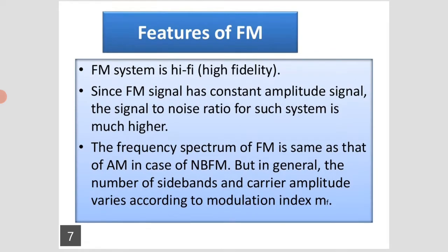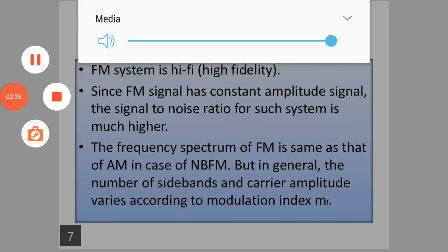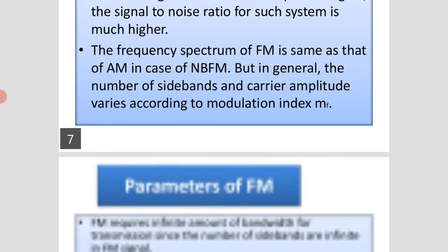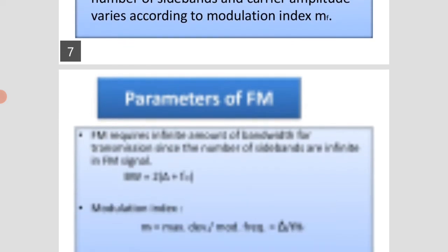The features of FM are: the FM system is high fidelity, since the FM signal has a constant amplitude. The signal-to-noise ratio of such a system is much higher. The frequency spectrum of FM is the same as that of AM in the case of narrow band frequency modulation, but in general, the number of sidebands and carrier amplitude vary according to the modulation index MF.